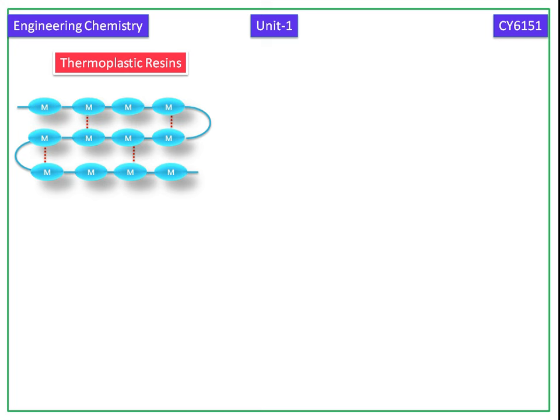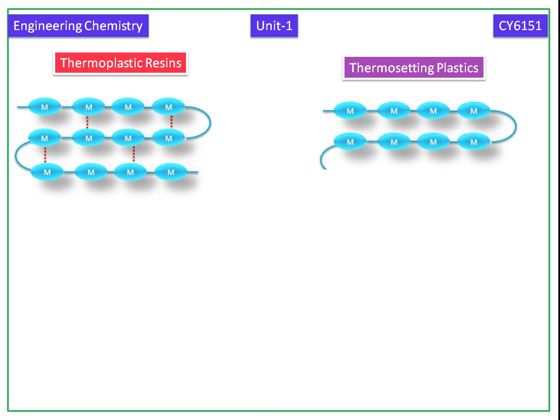They are represented by dotted lines. Thermosetting plastics are not linear chain polymers. They are branched chain polymers.